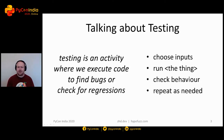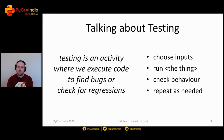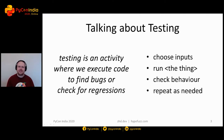To either find bugs or check for regressions speaks to a bit of a philosophical split in the testing community. Some people say that the reason we write tests is to actually look for bugs — we're not sure whether our code is correct, and we want to search for counter examples that demonstrate some kind of problem. The other view, which I've heard more often from companies with a move fast without breaking things idea, is that the role of testing in continuous integration isn't necessarily to find bugs, but just to confirm you didn't break anything previously known to be working.